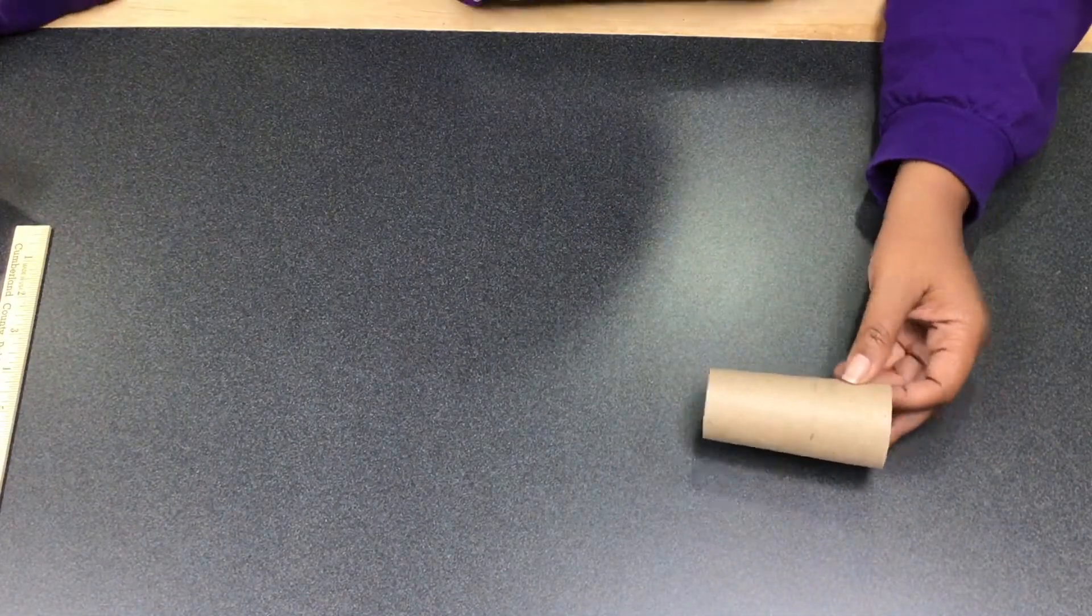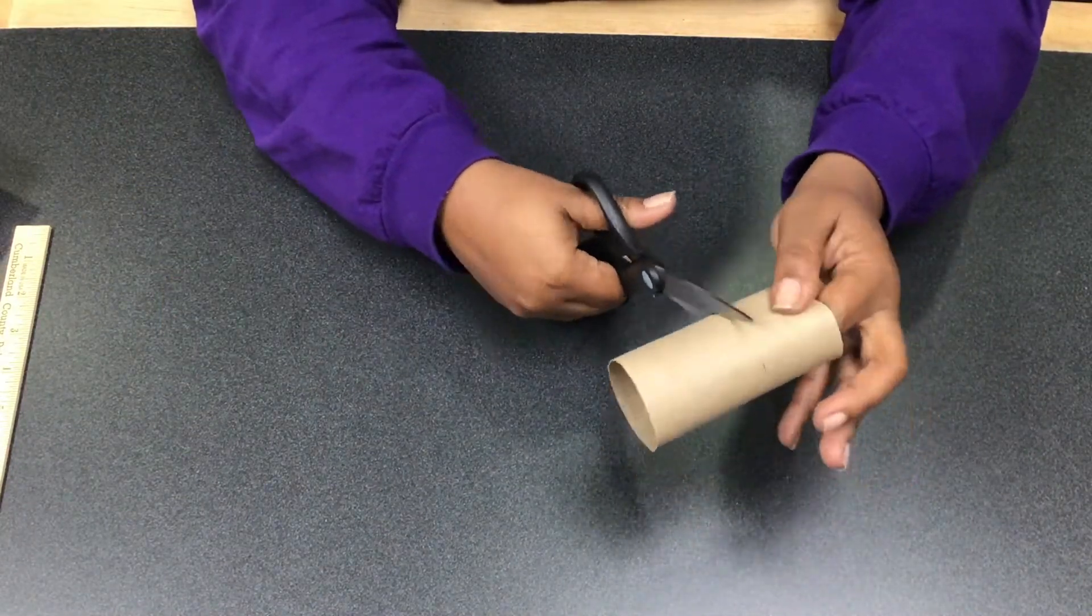Cut the toilet paper roll at the one and a half inch mark for the napkin holder height.